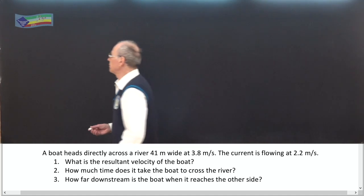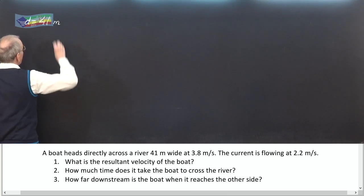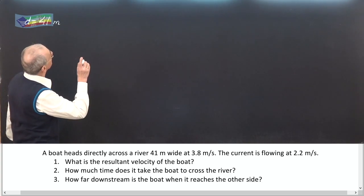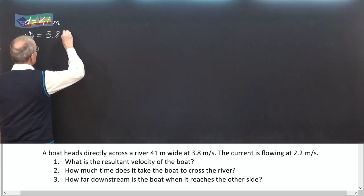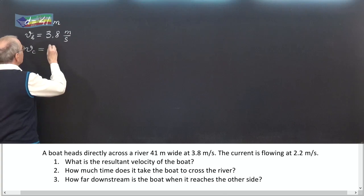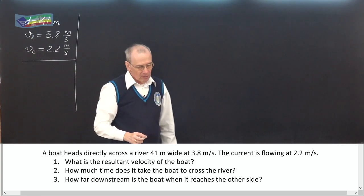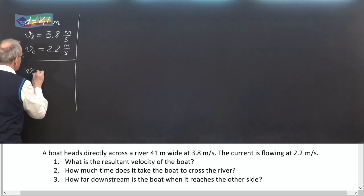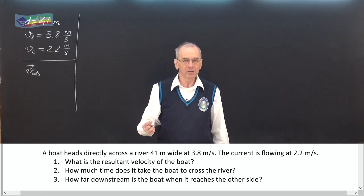So, let the width of the river be d, equal to 41 meters. The speed of the boat Vb is 3.8 meters per second, and the speed of the current Vc is 2.2 meters per second. What is the resultant velocity of the boat? Let's write it as V absolute velocity. We need to find both magnitude and direction of this vector.